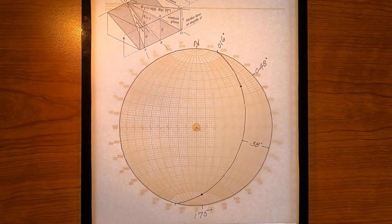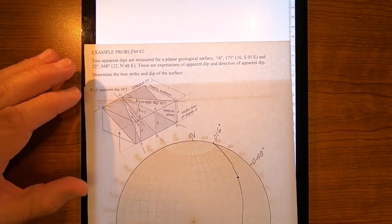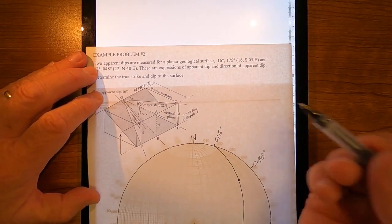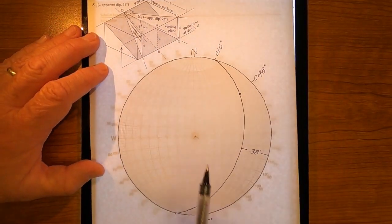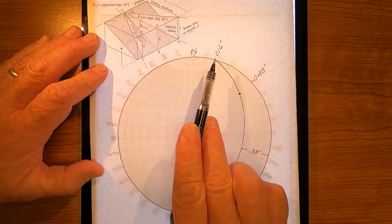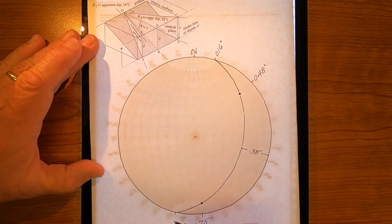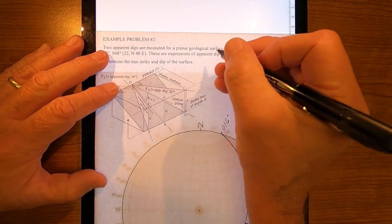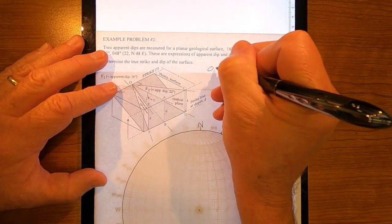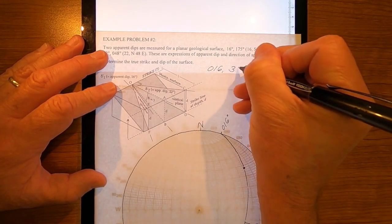So, the answer to this problem, the strike and dip. And as right arm rule, let me go back up here. If I face that direction of 016, my right arm will point in the direction that this plane dips to the southeast. So, by right arm rule, this would be expressed 016, 38.